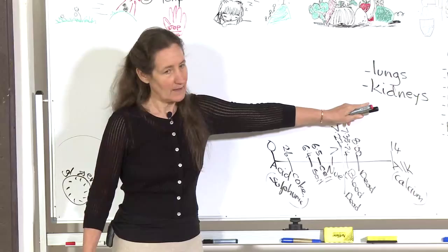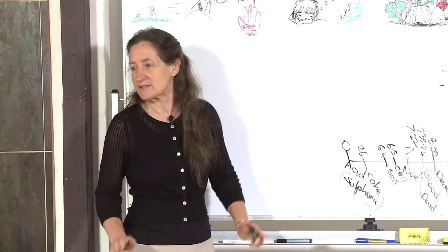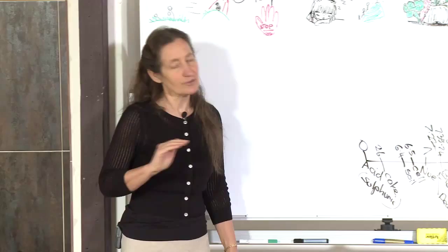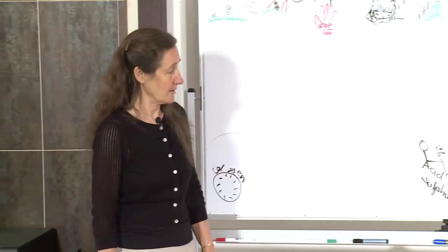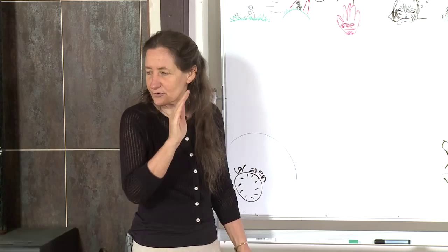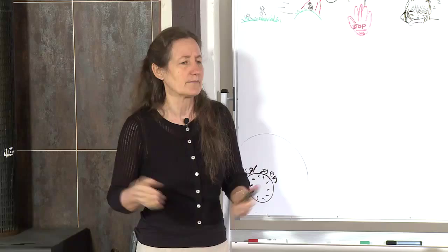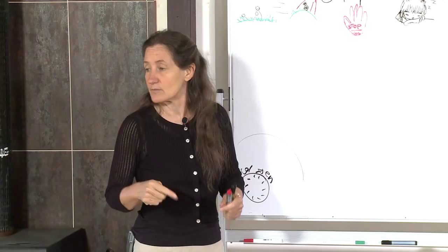The scales are tipped and blood pH starts to drop — 7.35, 7.34. Alarm bells go off. The last-resort buffer system is called on: calcium phosphate is pulled out of the bones into the blood in a form it should not really be in. This is a crisis to save the life. Blood pH immediately starts to balance — 7.34, 7.35 — we're safe, but at a cost. We now have calcium phosphate floating through the blood in crystal form, which can settle on the bone as bone spurs.